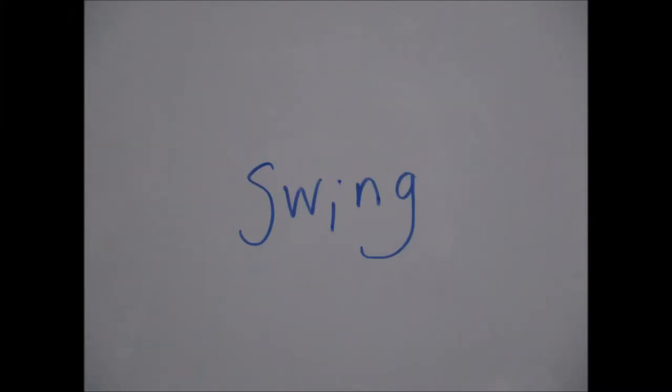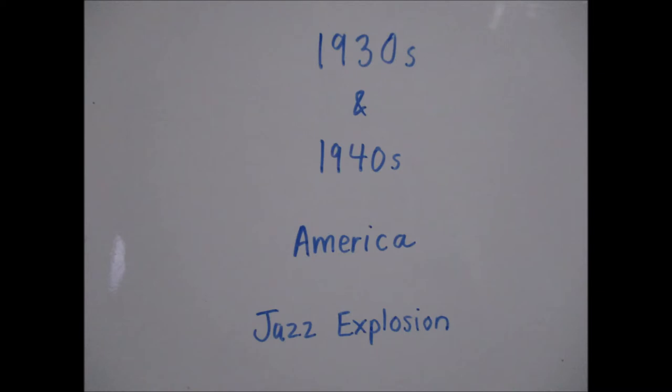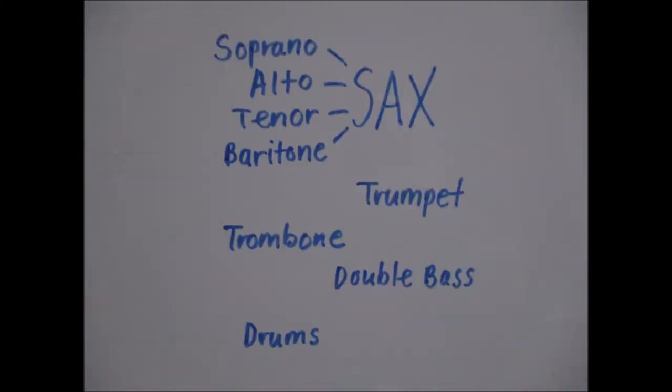Swing. Swing music was born in the 1930s and 40s in America. It followed the jazz explosion. Popular instruments were the soprano, alto, tenor and baritone sax, with the trumpet, trombone, double bass and drums.